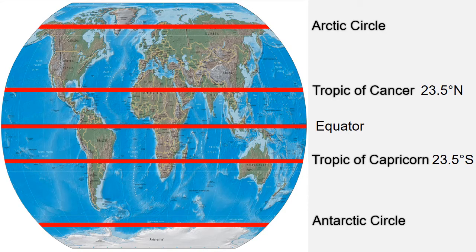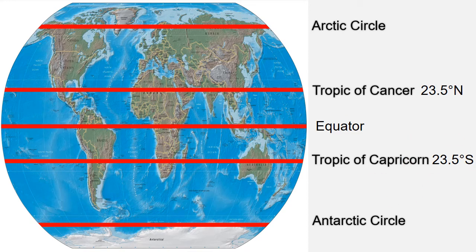Now see this image — this is the Tropic of Capricorn. This line is located in the southern part from the equator at 23.5 degrees south. What is the Tropic of Capricorn? I already uploaded a video about this, you can go and watch it. Now let's begin — which countries lie on the Tropic of Capricorn?